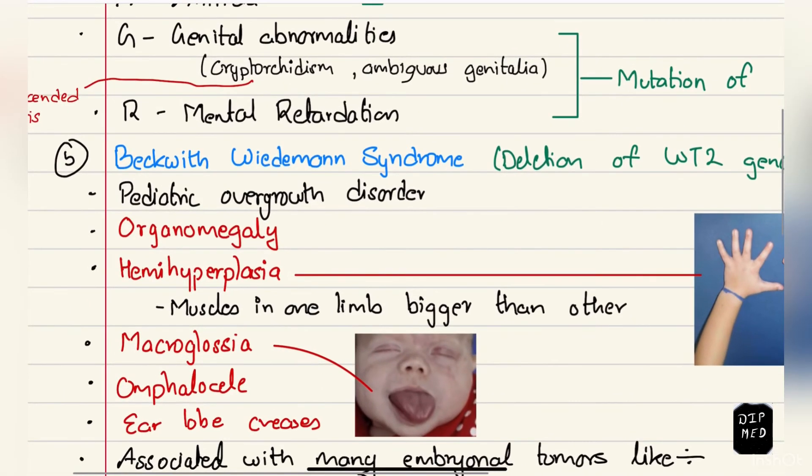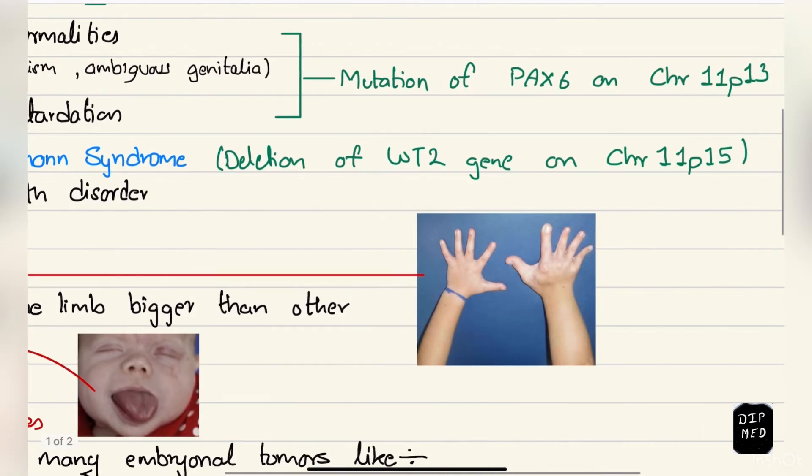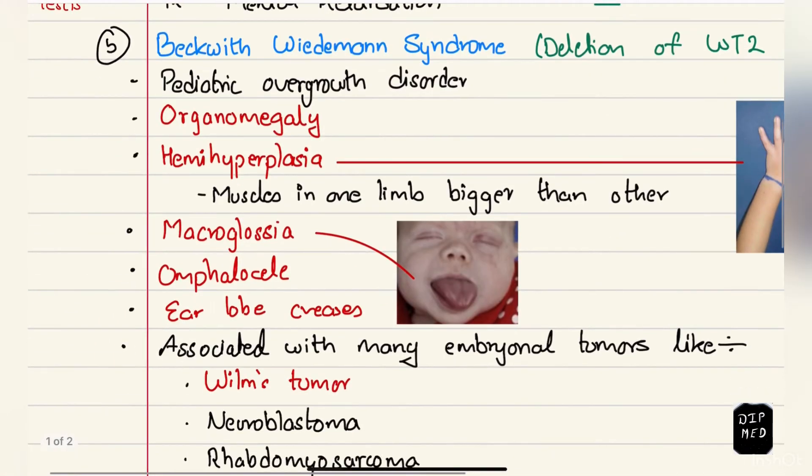It is a pediatric overgrowth disorder with organomegaly, huge organs, hemihyperplasia where one side is bigger than the other, macroglossia or huge tongue, and omphalocele. It's a condition where the content of the abdomen such as intestines come out from the abdominal wall due to a defect.